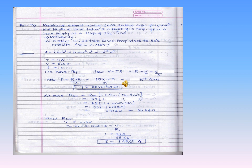One more numerical based on RTC: a resistance element having a cross-sectional area of 10 mm² and length of 10 meters takes a current of 4 amperes from a 220-volt supply at 20°C. Find the resistivity and the current it will take when the temperature rises to 60°C. The value of alpha at 20°C is given as 0.003 per degree C.